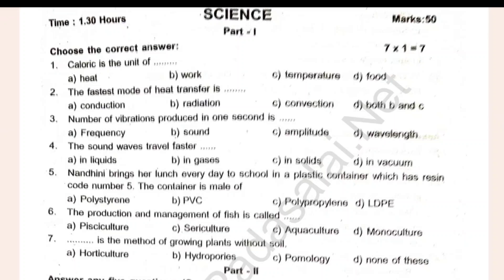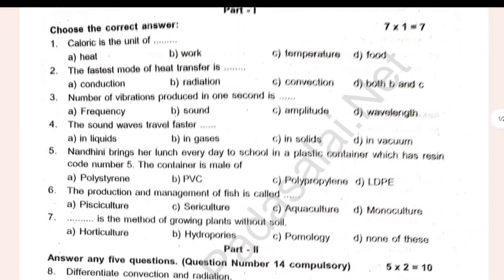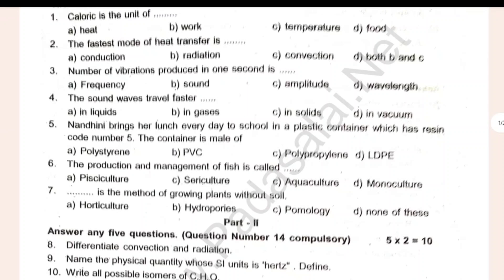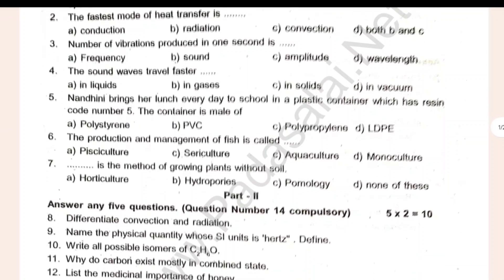The fastest mode of heat transfer is radiation. But the number of vibrations produced in one second is dash. The sound waves travel faster. Dash brings lunch everyday. The production and management office is called dash. Dash is the method of growing plants without soil.